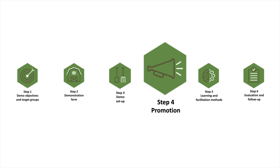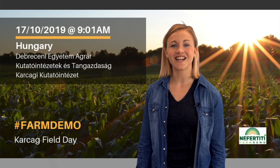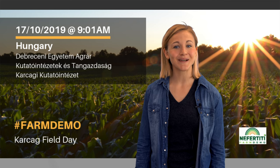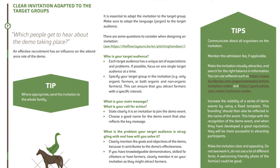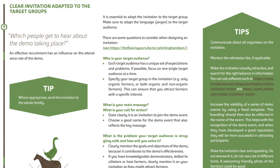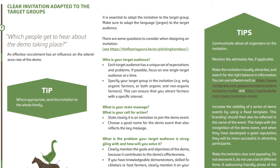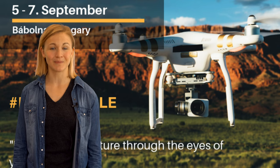Step four is about promoting your event. Invitations can be spread by using flyers, letters, emails, but also via newspaper articles, websites, social media, or even promotions on radio or television. On the Farm Demo Training Kit, you can find tips and templates to create your own promotion materials.